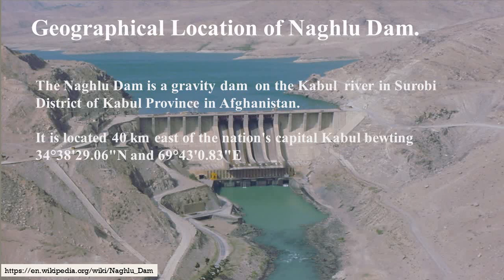The catchment area of the dam is 25,000 square kilometers, where it collects water from the capital Kabul and neighboring provinces like Logar, Wardak, Parwan, Panjshir, and a small part of Ghazni province. It collects about 20% of the runoff from all of Afghanistan.